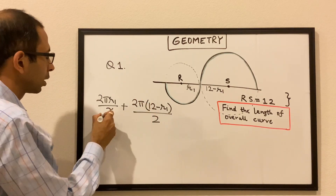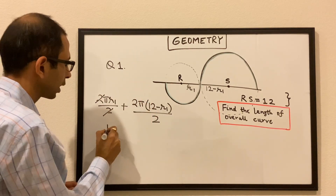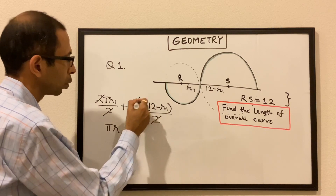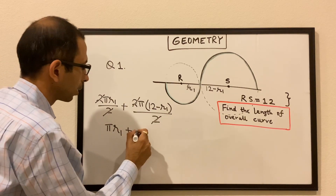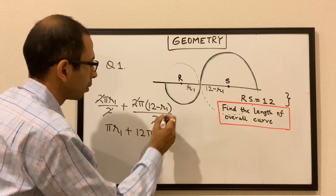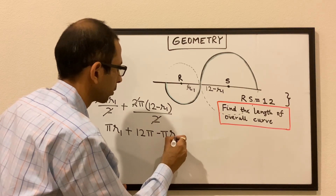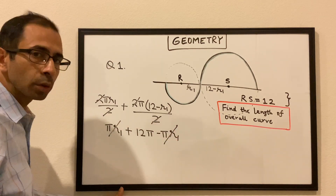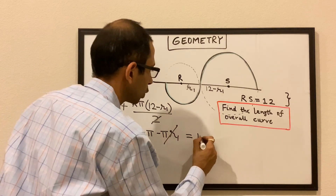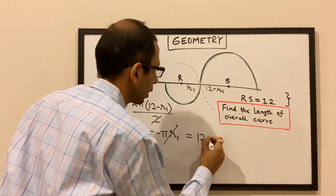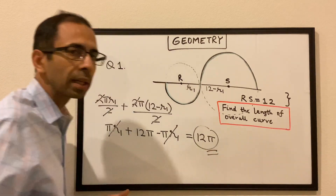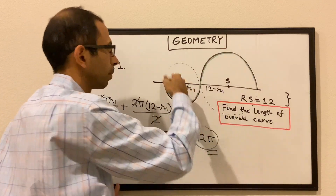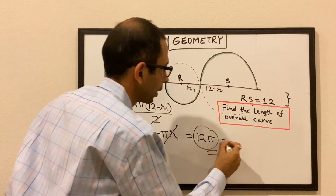Let's solve this. The 2s cancel here, so it gives πR1, plus the 2s cancel here as well, giving 12π minus πR1. πR1 and minus πR1 also cancel, and we get 12π as the overall length of this arc. So that is our answer.